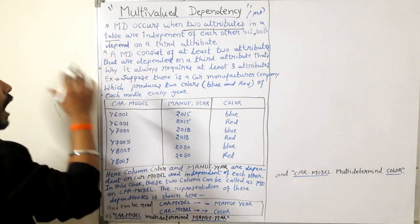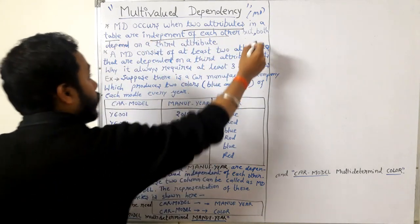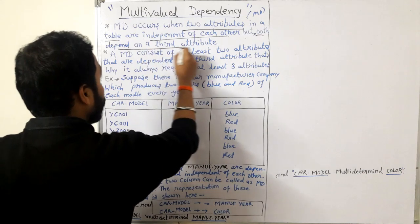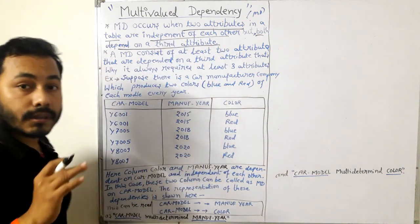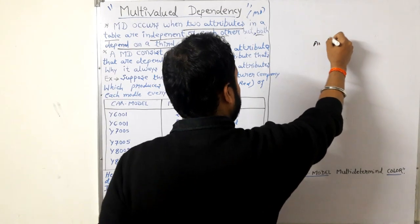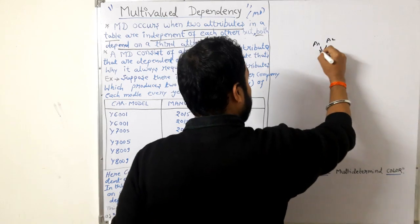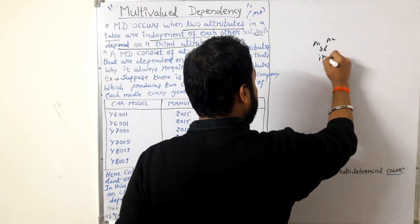Say we have two attributes A1 and A2. They are independent - A2 and A1 are independent. But what happened? There exists another attribute, say AT.